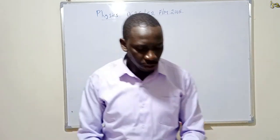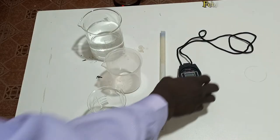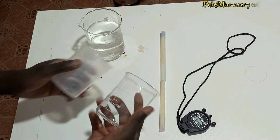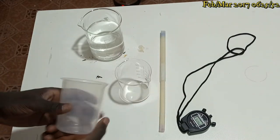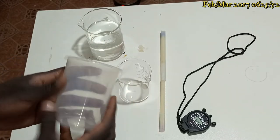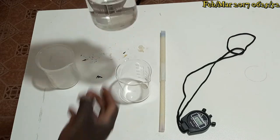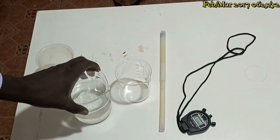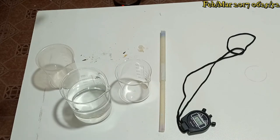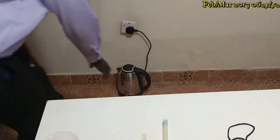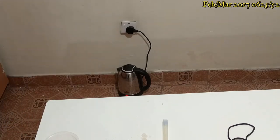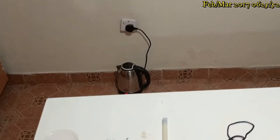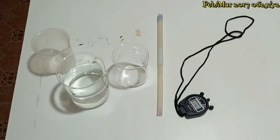So we have a stopwatch, the beakers — we will use the glass beaker. We have the plastic beaker which we will use to hold the hot water. We have cold water here, and the hot water is boiling over there on the electric heater. Once it is done, we will be able to start.